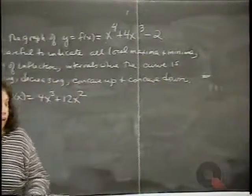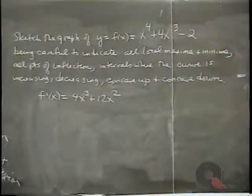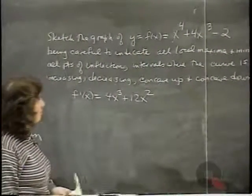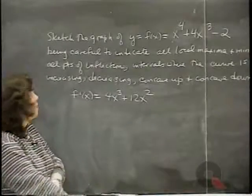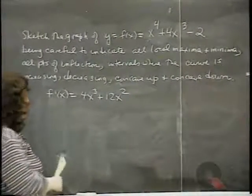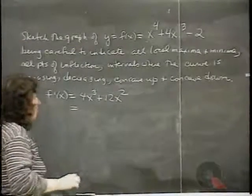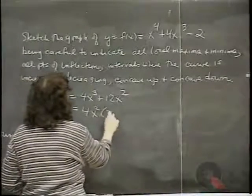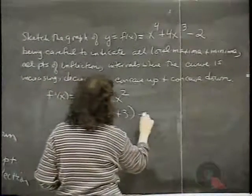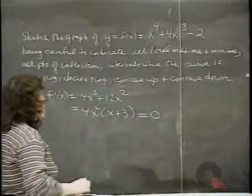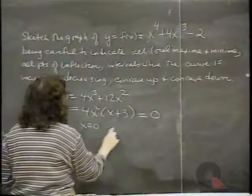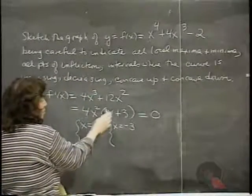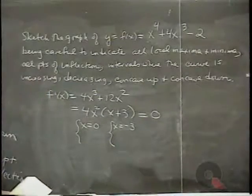Finding the derivatives: f prime of x equals 4x cubed plus 12x squared, and f double prime of x equals 12x squared plus 24x. Setting f prime equal to zero, we factor: 4x squared times x plus 3 equals zero, giving critical numbers x equals 0 and x equals minus 3.